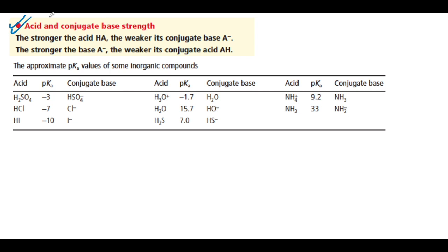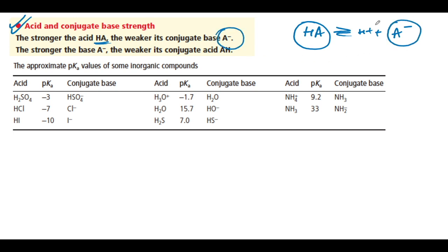Now, the Brønsted acid-base theory states: the stronger the acid HA, the weaker its conjugate base A⁻. If the acid is very strong, it stays dissociated into H⁺ and A⁻, so the tendency of A⁻ to return to HA is very low — that is why it is a weak base, because it does not want to accept a proton. The vice versa is also true.